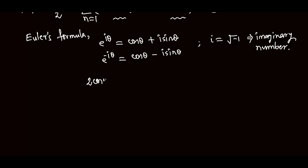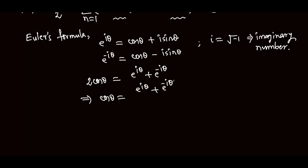Adding these two Euler's formulas, we get 2 cos theta equal to e to the power of i theta plus e to the power of minus i theta. Therefore, cos theta is equal to e to the power of i theta plus e to the power of minus i theta, divided by 2.